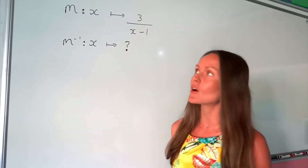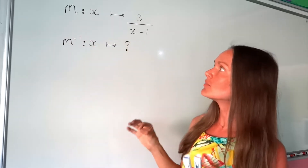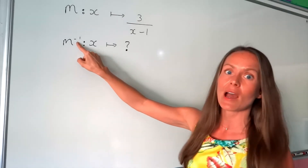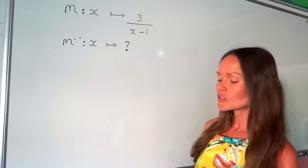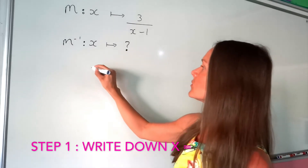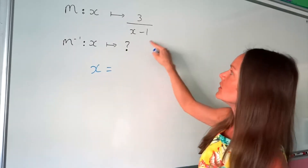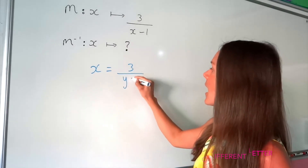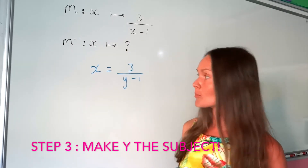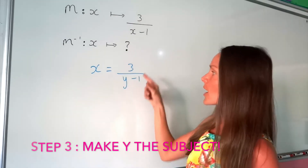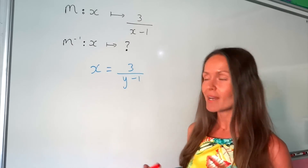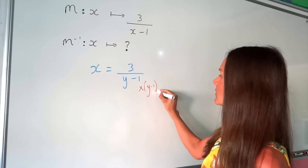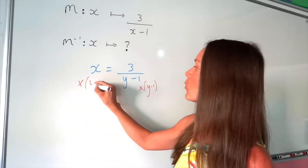In this last one, I've been given a function m of x. It's written slightly differently in notation, but it means exactly the same thing. We're asked to work out the inverse of that function m of x. Just like before, write down x equals, then write down the function but replace x with a different letter — I'm going to call it y again. We're just rearranging to make y the subject of the formula. To get rid of a fraction, you must multiply by the denominator — the part that's underneath. So I'm going to multiply by all of that, so y minus 1, and I'm going to put it in brackets because I'm multiplying all of that denominator.